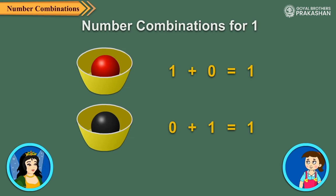When we take one red bead and no black bead, then the sum is 1.